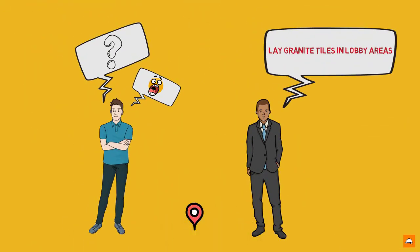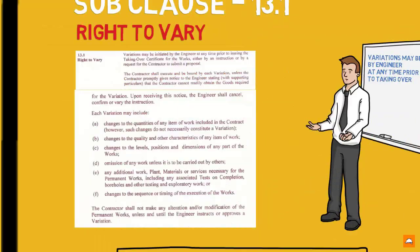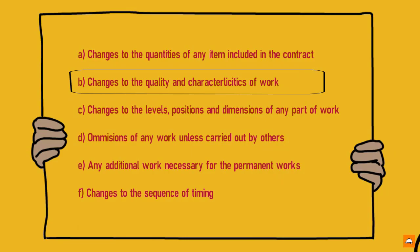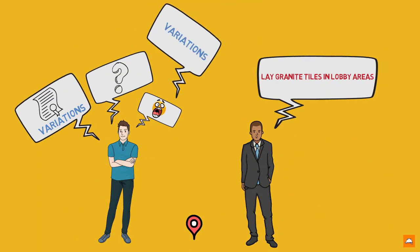Now, let's go back to our story. So here Kasun did not receive this instruction in writing, but it is obvious that this instruction constitutes a variation and as per subclause 13.1, this is a change to the quality and characteristics of work. Hence this comes under variations and adjustments.